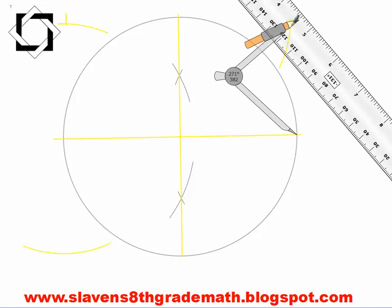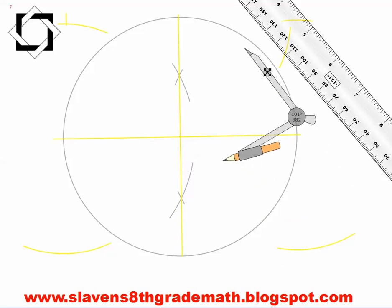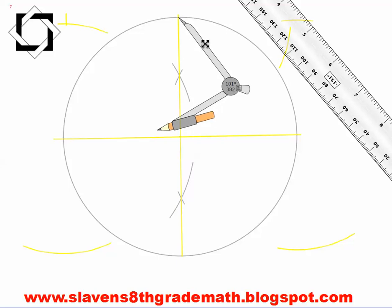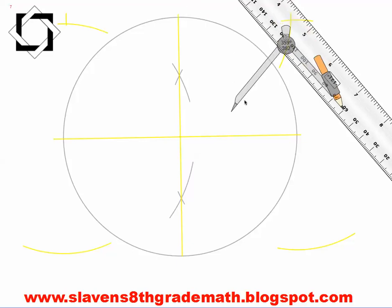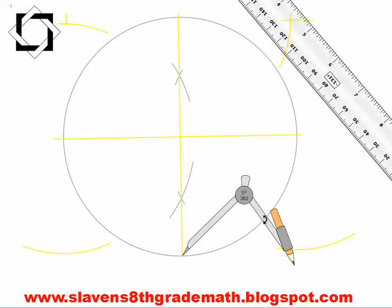The trick here is you have to have the arcs intersecting. Making larger arcs is probably not a bad idea, so I just need to extend my line so that it crosses. Now I have one more set of arcs to make coming off of this intersection point.